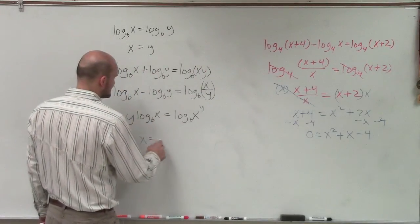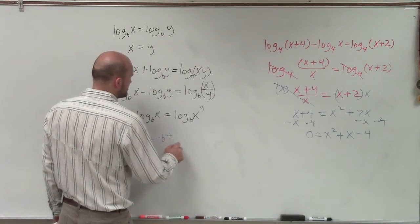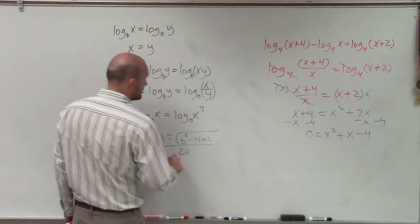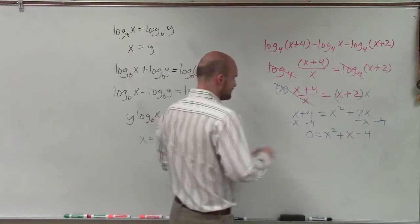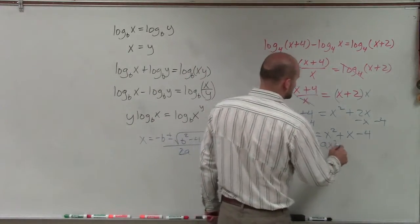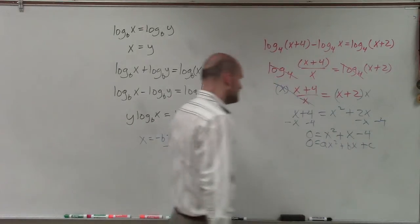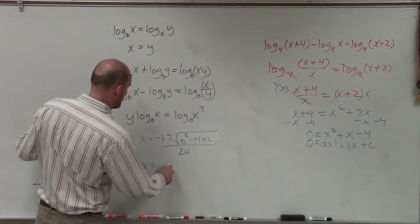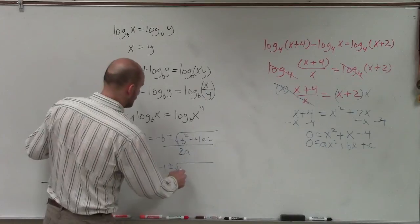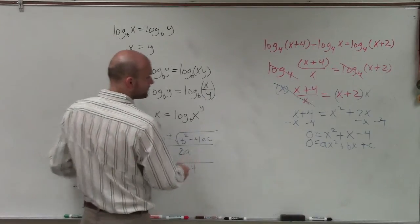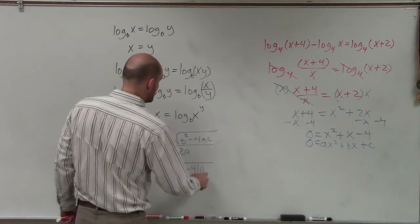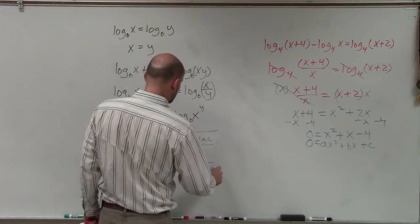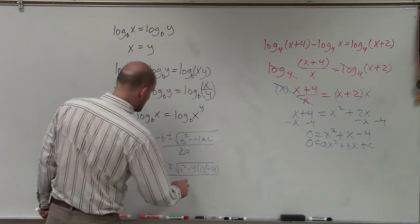Remember, the quadratic formula states that x equals the opposite of b, plus or minus the square root of b squared minus 4ac, all over 2a — and that's only when it's in quadratic form: 0 equals ax squared plus bx plus c. So by plugging in my values, I have x equals negative 1, plus or minus the square root of 1 squared minus 4 times 1 times negative 4, all divided by 2 times 1.